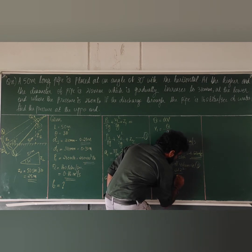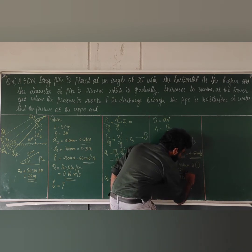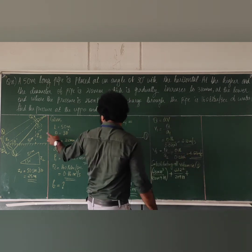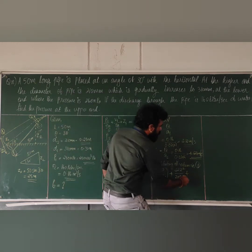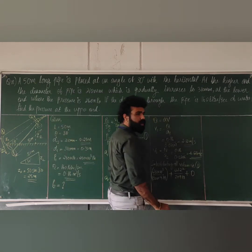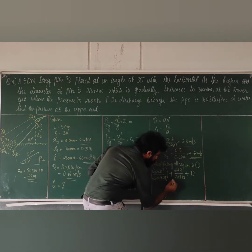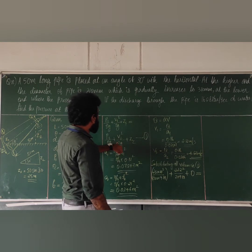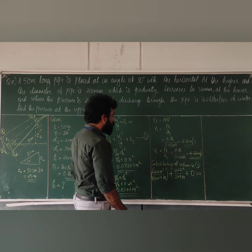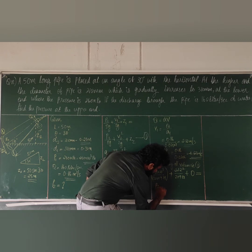Substituting all values into Bernoulli's equation: V1 squared over 2g is 2.12 squared divided by 2 times 9.81. Z1 value is 0 since we take the lower end as the datum. So Z1 equals 0.